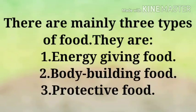Now let us learn about the names of three types of food. There are mainly three types of food. They are: number one, energy giving food; number two, body building food; and number three, protective food.